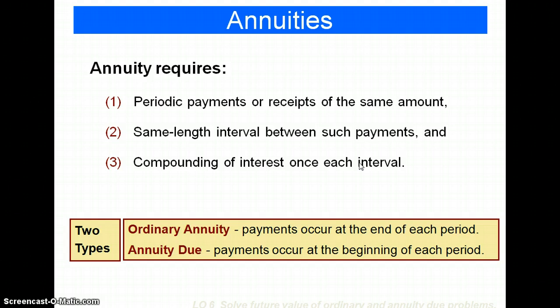An ordinary annuity is one where the payment occurs at the end of each period. The annuity due is one where the payment occurs at the beginning of each period.